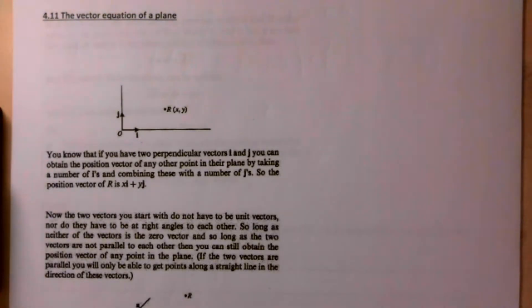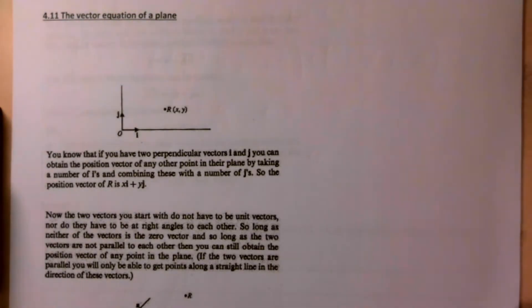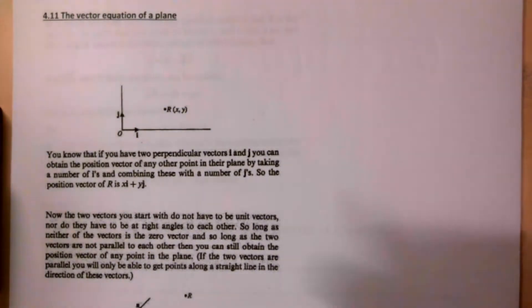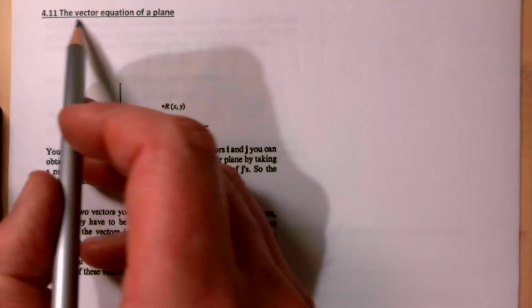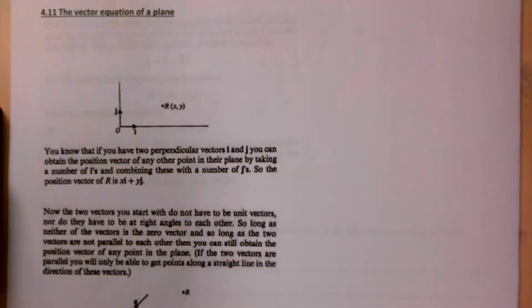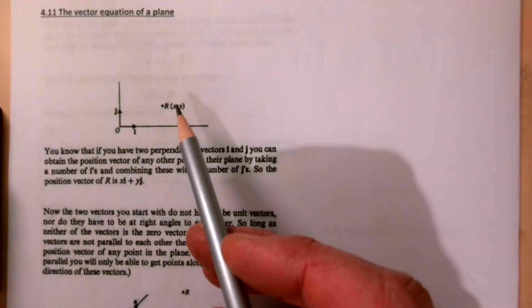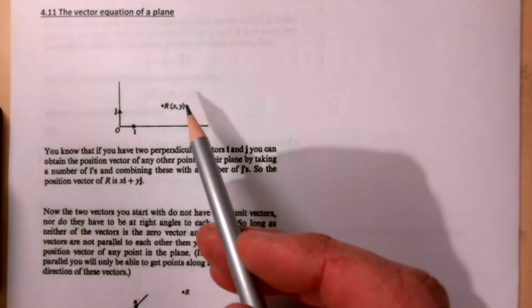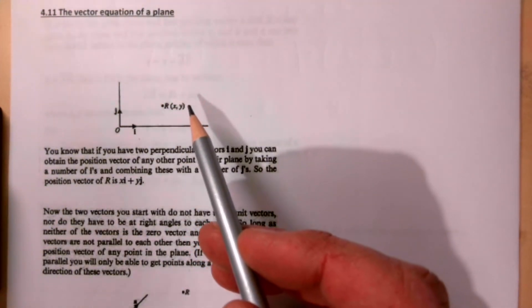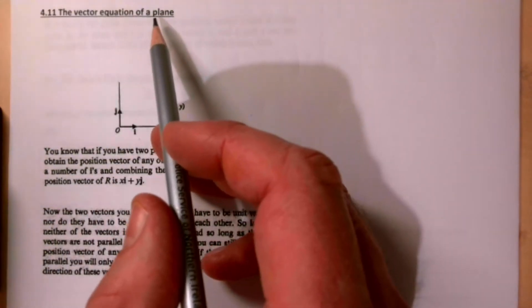This is AS Further Pure Maths. We are in unit 4 vectors and we're looking at 4.11, the vector equation of a plane. The previous video was the scalar form of the equation of the plane; this is now a vector form.